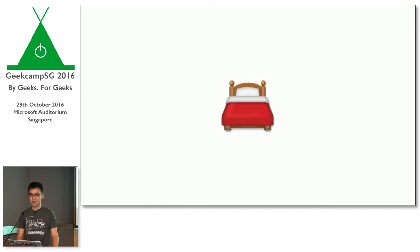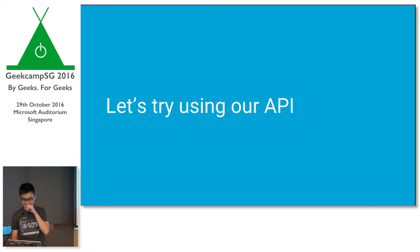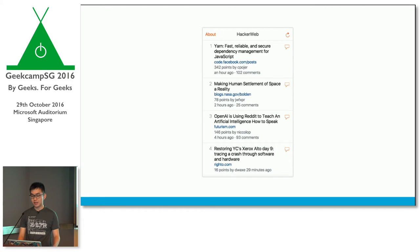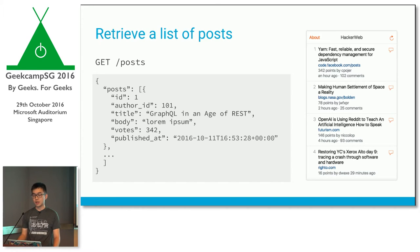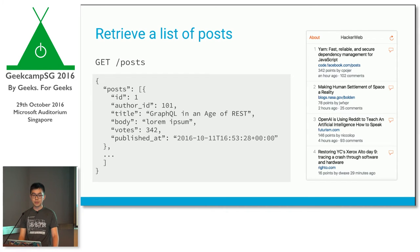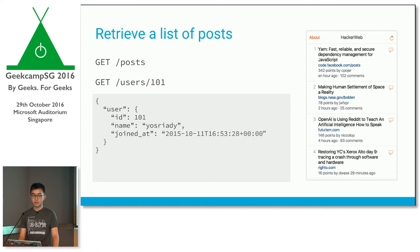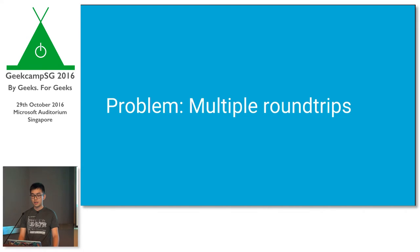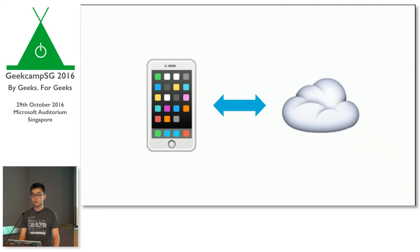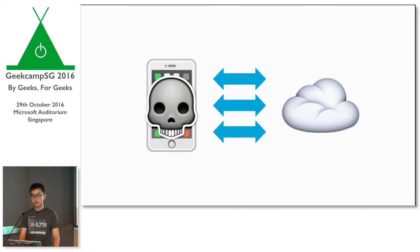So we're done with our REST API. Let's try using it. We have to make an API call to get a list of posts — we GET the post namespace and get back a JSON array of objects. But we're still missing the author's username, so we have to make a separate API call to get the user's name — and we have to do this for every single post. The problem is we have to make multiple round trips. Each API call is a separate request-response cycle, and especially on mobile with variable network conditions, this might be undesirable.